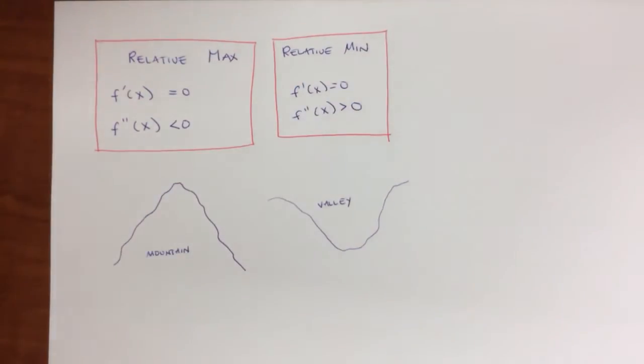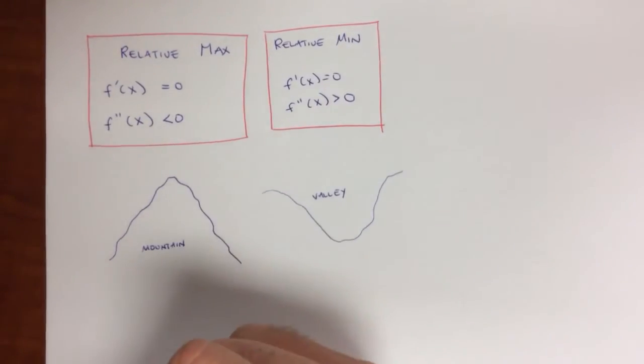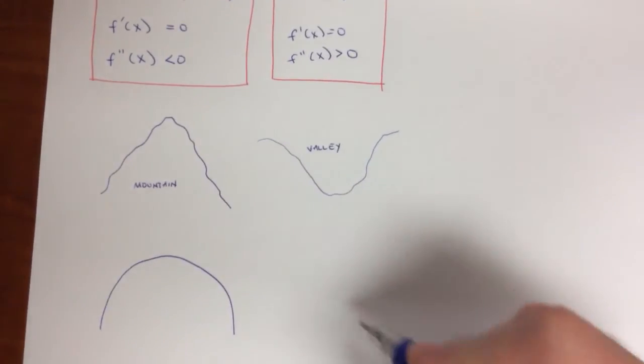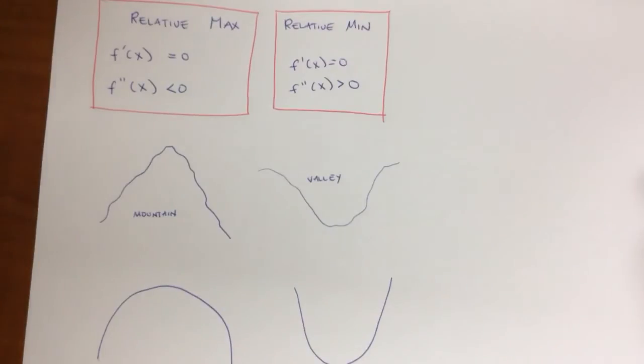So they were singing about mountains and valleys. Well, if we think of a mountain, a mountain looks a lot like a concave function. A valley looks a lot like a convex function. So when they're saying there ain't no mountain high enough, they're singing there's no concave function high enough that can keep me from getting to you, babe.